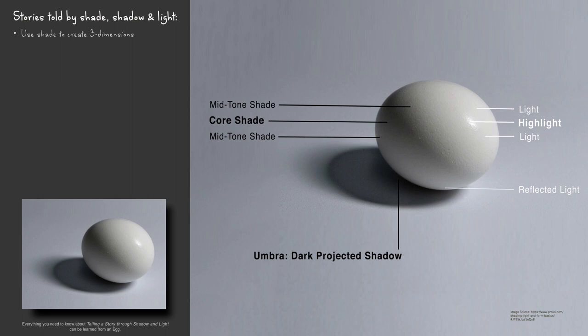This darkest projected shadow is called the umbra. Further away, the projected shadow lightens to become the penumbra, which is surrounded by a darker halo. Further away still, it becomes a diffuse shadow.